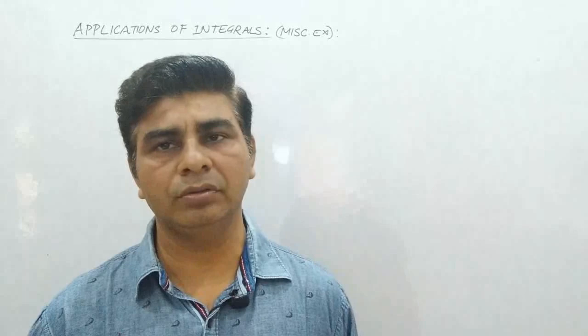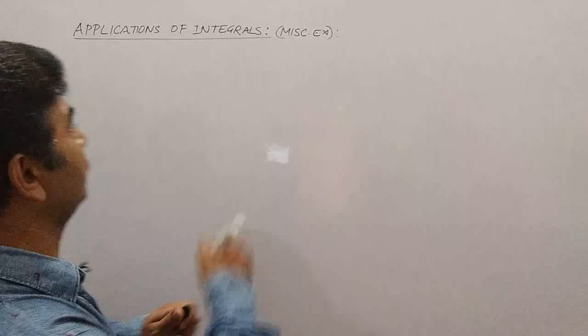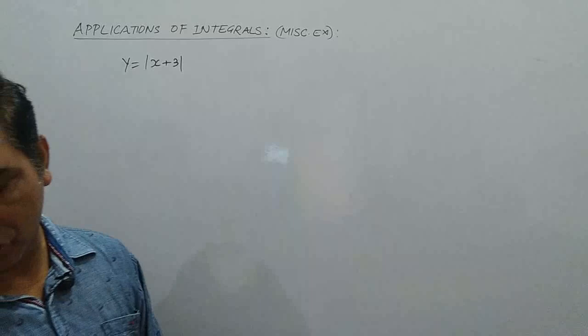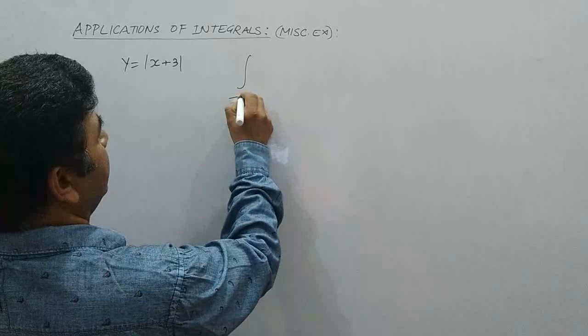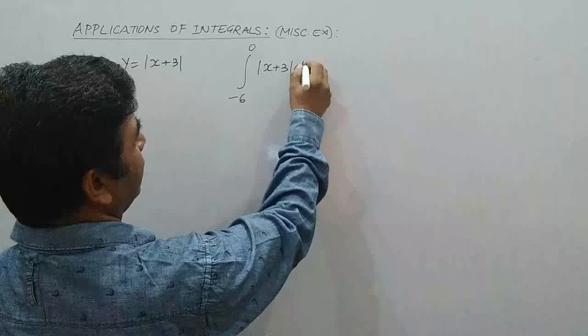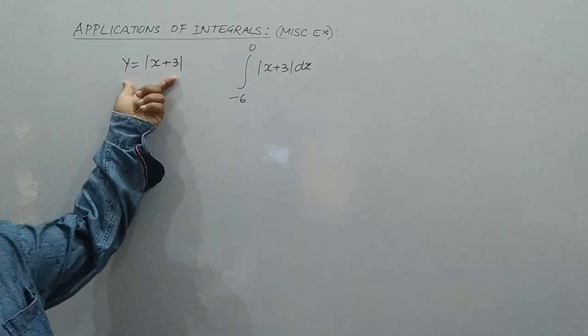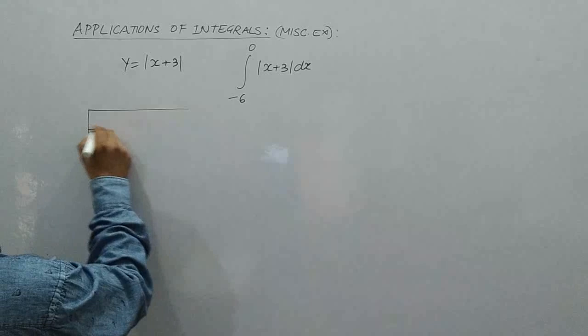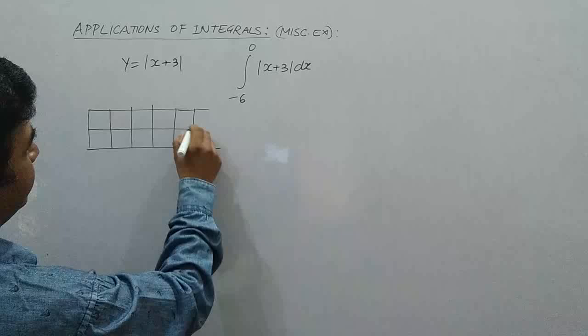Question number 4 states: sketch the graph of the function y is equal to mod of x plus 3. We need to draw the rough sketch and evaluate the integration from minus 6 to 0 for the function modulus of x plus 3. Let me draw the rough sketch for this modulus function first. Let me draw a table so that you can find the coordinates.